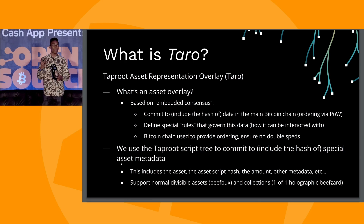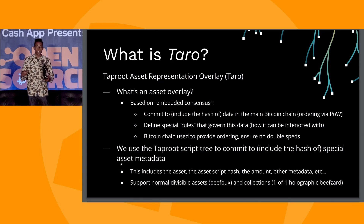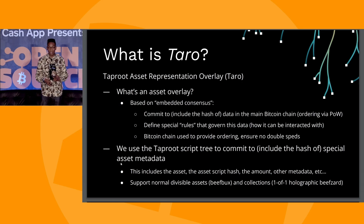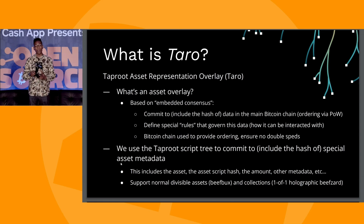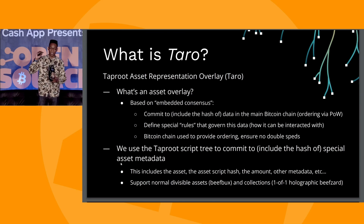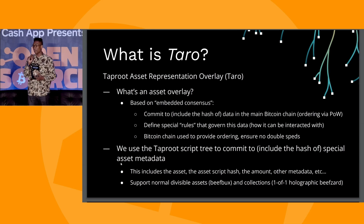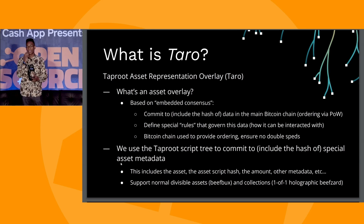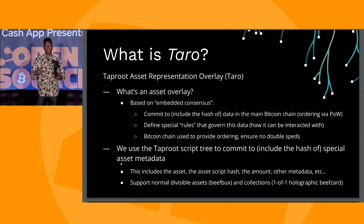This is really cool because we don't have to worry about double spends, we don't need a consensus network, we don't need proof of stake. We just use Bitcoin as it is today. The trick in Taro is that rather than committing all the data on-chain outright, we instead commit things into the script tree itself. This provides a very nice structured commitment format which allows the system to be very extensible.